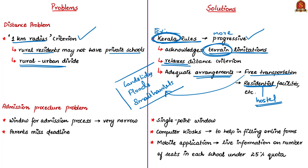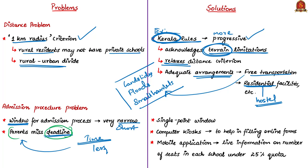The window period for the admission process for RTE vacancies in private schools is very short and narrow. The time provided to fill up forms and complete the entire application process is very limited, causing many parents to miss deadlines and resulting in thousands of vacancies. The authors suggest a single-point window for the admission procedure for all school boards, with computer kiosks to assist parents who may not be able to fill the form online, especially for illiterate parents or those unfamiliar with the process.